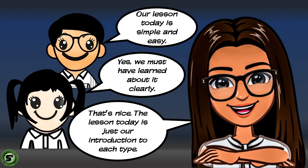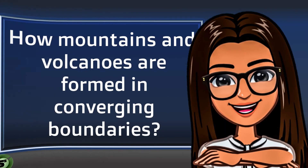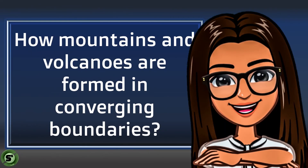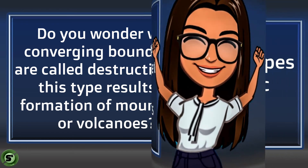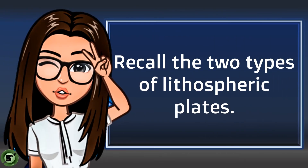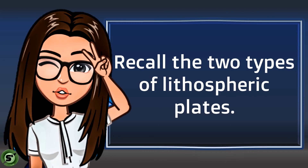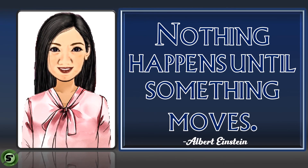That is our lesson for today. Do not forget this lesson because this is just our introduction to each type of boundaries. As I mentioned earlier, we have deeper studies on each type. We will be discussing convergent boundaries first. In studying convergent boundaries, you will clearly realize how mountains, volcanoes, and other geologic features are formed. Do you wonder why converging boundaries are called destructive, yet this type results in mountains or volcanoes? You will know about this next lesson. To make our lesson easier, review about lithospheric plates which we have already studied. Let us end today with this line: 'Nothing happens until something moves,' by Albert Einstein.